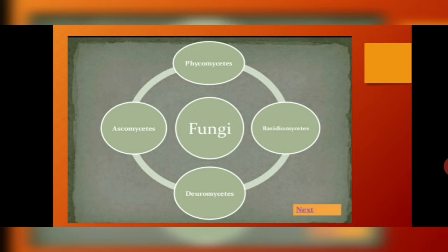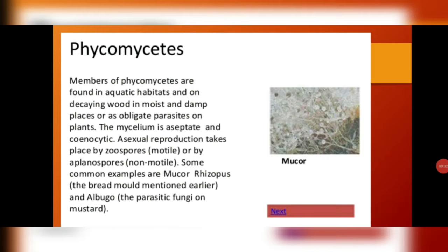Fungi are further divided into four categories: ascomycetes, phycomycetes, basidiomycetes, and deuteromycetes. Members of phycomycetes are mostly found in aquatic habitats or on decaying wood in moist and damp places, or as obligate parasites on plants. They have an aseptate and coenocytic mycelium. Asexual reproduction occurs by zoospores, which are motile spores, or aplanospores, which are non-motile spores. Examples include Mucor, Rhizopus (bread mold), and Albugo, which is a parasitic fungus on mustard plant.